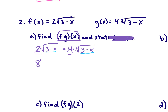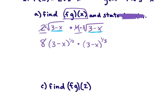I'll convert to exponents to combine them. The square root becomes (3 minus x) to the 1/2 power, and the cubed root becomes (3 minus x) to the 1/3 power. Since the bases are the same and we're multiplying, we add the exponents. So this becomes 8 times (3 minus x) to the power of 1/2 plus 1/3.